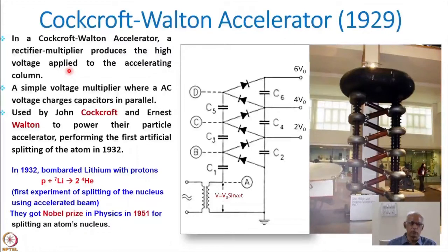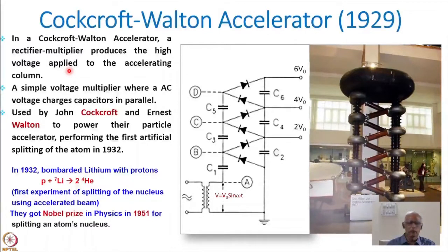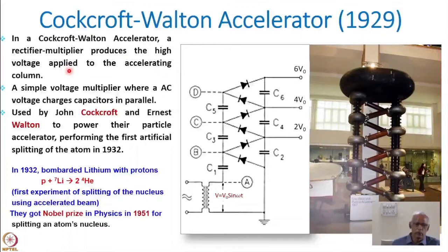In a simple voltage setup, AC voltage charges the capacitors. When we discussed the two plates earlier, we were applying a battery or DC voltage source. Now that DC voltage is replaced by an AC voltage source, which allows reaching much higher voltages. With DC, the capacitor can only be charged to that voltage, while using an AC source with several units allows much higher voltages.